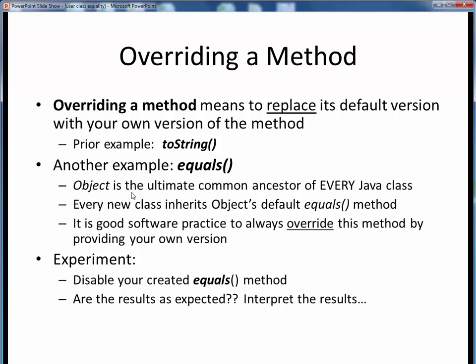The equals method that you create in any new class represents another example of overriding a method. The object class, the ultimate uber ancestor of all Java classes, already provides a default equals method. But it's considered good software practice to always explicitly override this method by replacing it with your own version. If you want to experiment and demonstrate this, try commenting out your own equals method and see what happens. Chances are the results won't be as you expect.